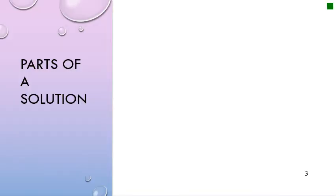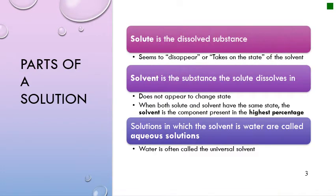The first thing we're going to look at are the parts of a solution. Please remember that you have two parts: the solute and the solvent. The solute is the substance that gets dissolved; the solvent is the substance that is doing the dissolving. When the solute and solvent are in the same state of matter, there will be no apparent change in state, but the substance found in the greatest amount will be your solvent.